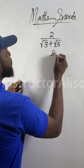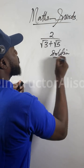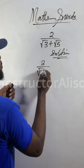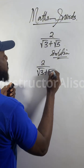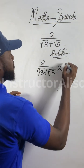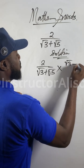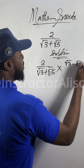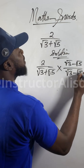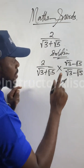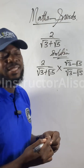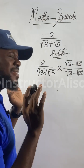So, solution. The first thing I would do: I would say two divided by square root of three plus square root of five, times the conjugate of this guy, which will be root three minus root five, divided by itself. Remember I said if this guy is divided by itself, it equals one, and one times the original gives us back the original question. So you don't manipulate anything.